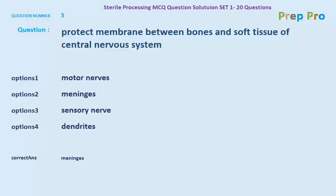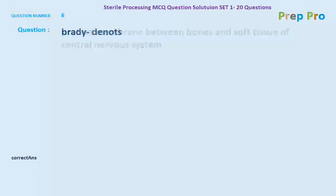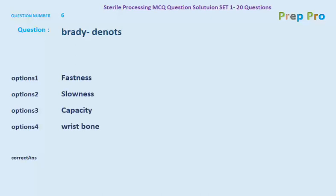Question number six: brady denotes what? The options are fastness, slowness, capacity, and response. Brady is the term used for slowness, so the correct answer is slowness.